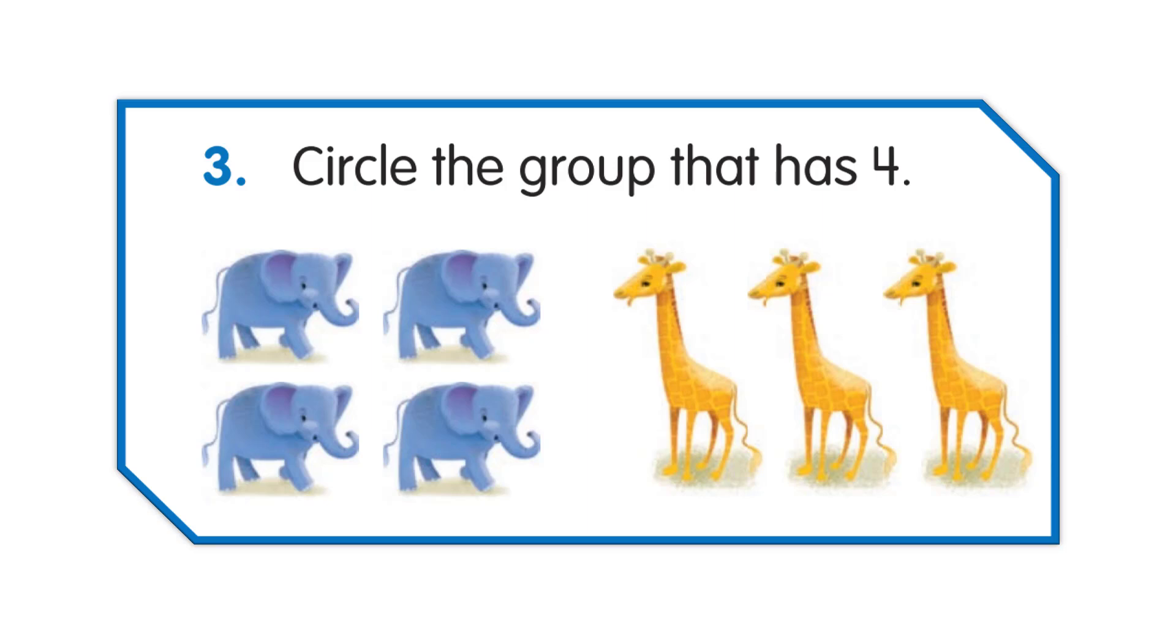We have to circle the group that has 4 objects. Here, the first group has 4 elephants and the second group has 3 giraffes. Therefore, we will circle the first group. Very good.